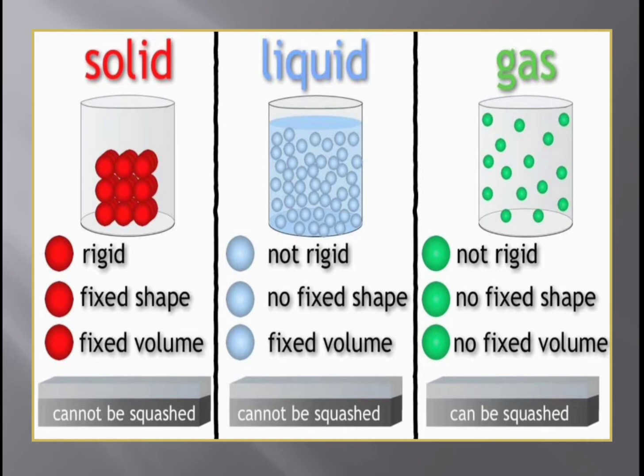But the volume is the same — the amount of liquid remains the same, so the volume is fixed. For example, milk and water.